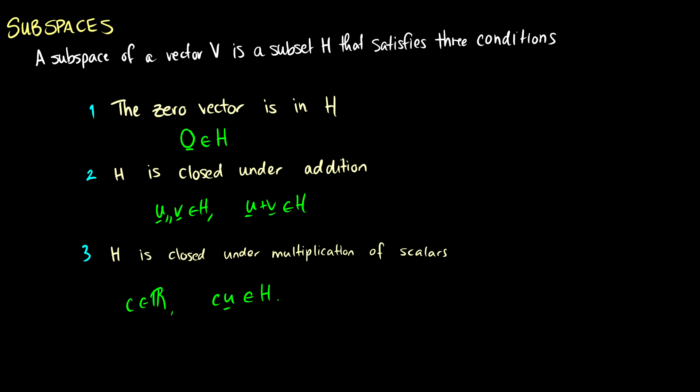These are also required for vector spaces, and from these three conditions you can get the rest of the axioms needed to satisfy a vector space. So essentially, subspaces are also vector spaces — they just come from a bigger vector space and are limited to a smaller space.